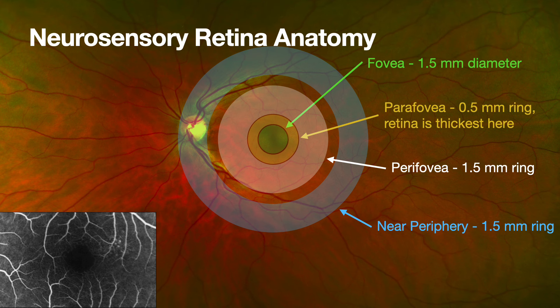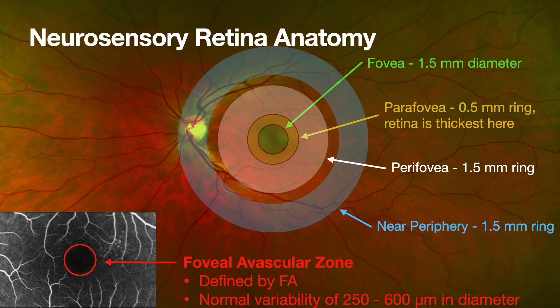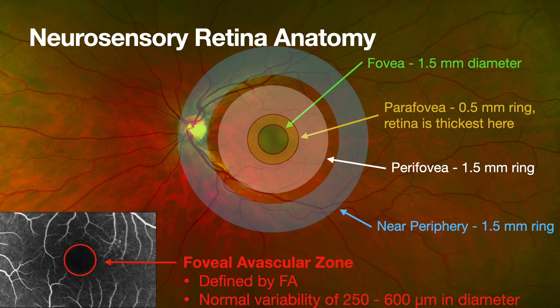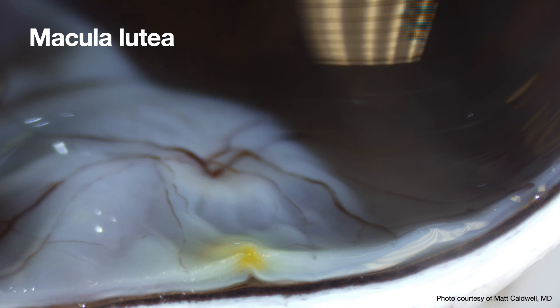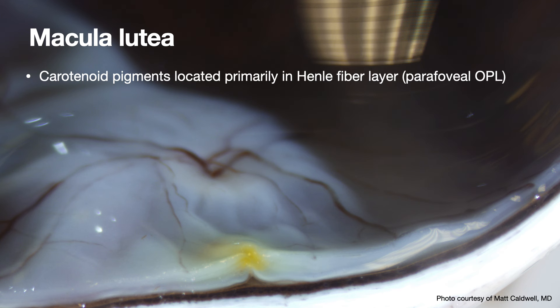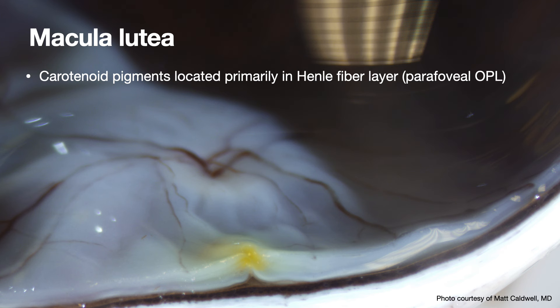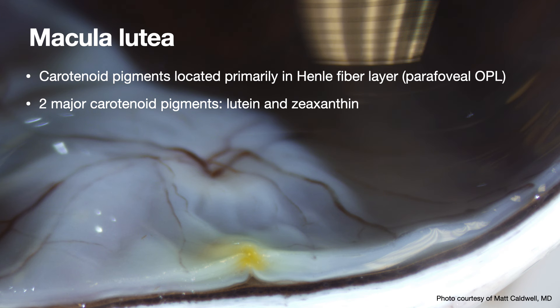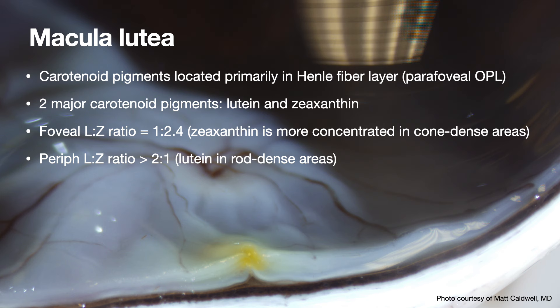Macula lutea means 'yellow spot.' The pigments are primarily in the Henle fiber layer, which is basically the outer plexiform layer in the parafoveal region. Two major carotenoid pigments: lutein and zeaxanthin. Zeaxanthin is more concentrated in cone-dense regions, whereas lutein is more in rod-dense regions.